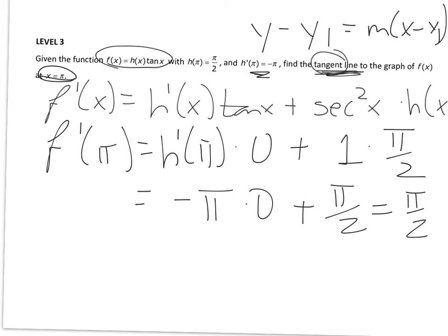I still need a y coordinate, which I'm going to find from the original function. f of pi is equal to h of pi times tangent of pi. But this just became trivial, because we already said the tangent of pi is equal to 0.